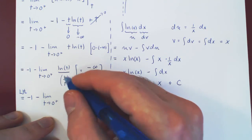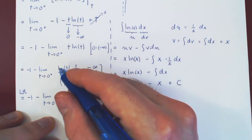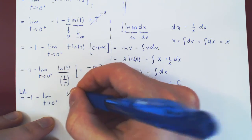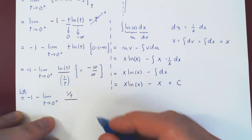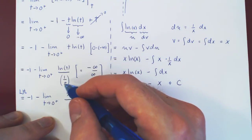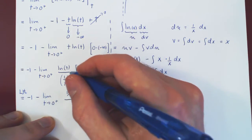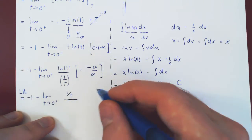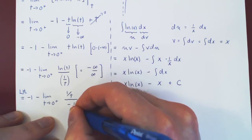So, before I differentiate, or actually I'll differentiate right away, the derivative of ln of t is 1 over t over the derivative of 1 over t, and if you think of this as t to the negative 1, you will get, by the power rule, negative 1 times t to the negative 2, and that is negative 1 over t squared.